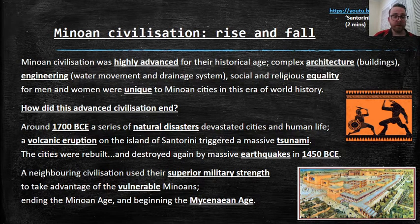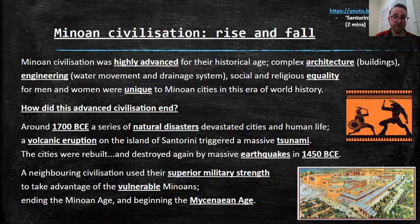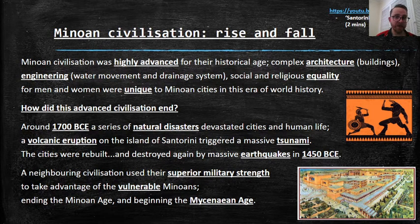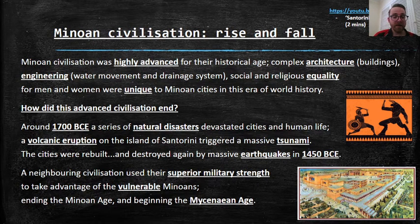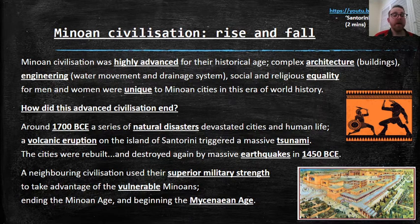So how did this all come to an end? Unfortunately, around 1700 BCE, a series of natural disasters devastated cities and human life. Think back to the bushfires we had in January — now imagine if that was followed by a tsunami, then an earthquake, then a volcano, then a meteor. That's basically what happened to the Minoans. A volcanic eruption on the island of Santorini triggered a massive tsunami. The cities were rebuilt, however they were destroyed again by massive earthquakes in 1450 BCE.